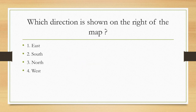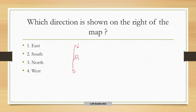Next question: which direction is shown on the right of the map? We just saw that the top of the map is north and the bottom is south. If you are facing north, your right side is east. So the right side of the map is east. East is the correct answer.